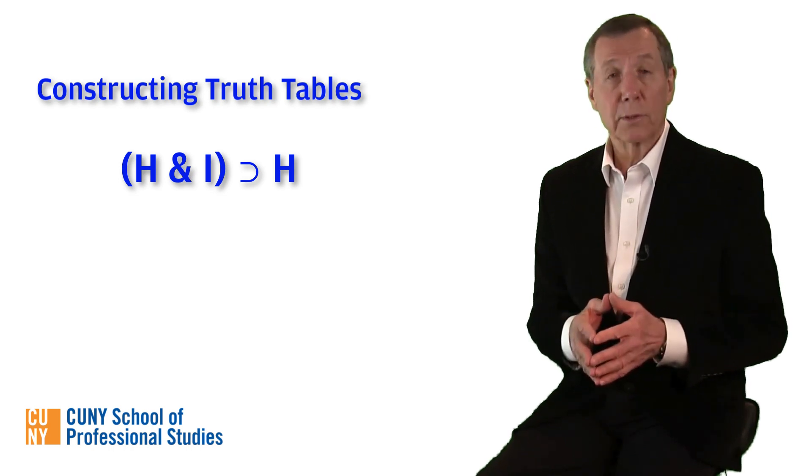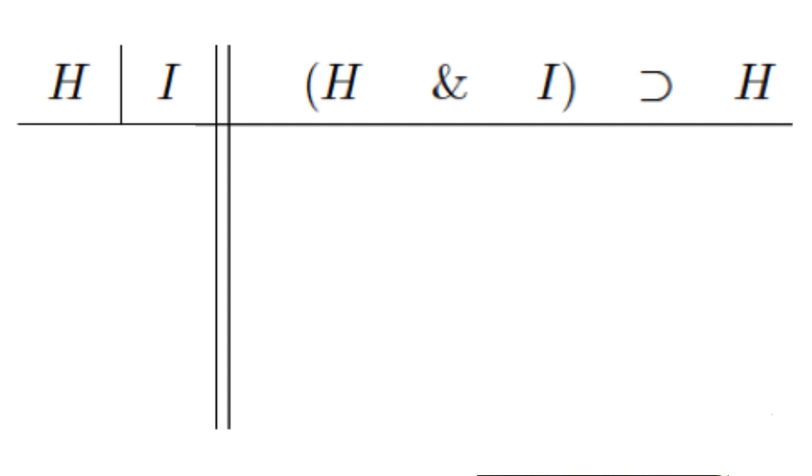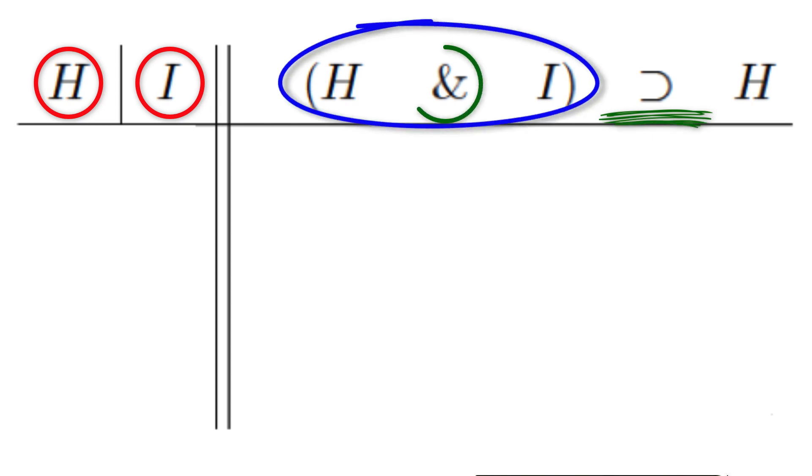Let's construct a truth table for it, starting with the header row. This sentence has two variables, H and I, connected conditionally with the antecedent containing the conjunction of H and I.